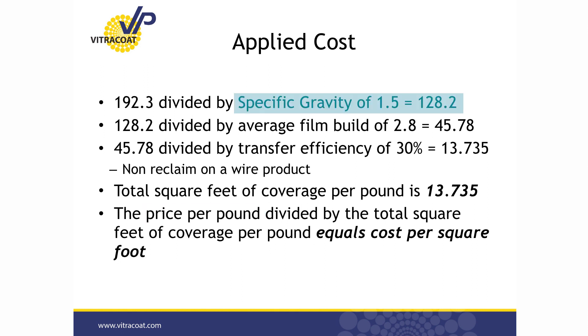The specific gravity can range from 1.2 to 3.5, though typically it's going to be in the 1.2 to 1.9 range. This gravity is going to tell you the mileage of that product, but the other variables are going to determine exactly how much coverage you can get based on your application.